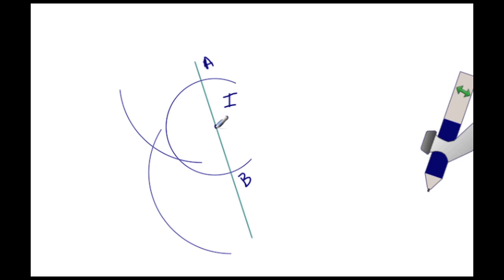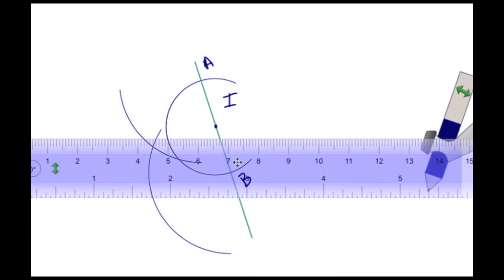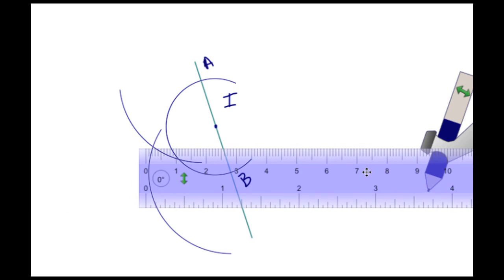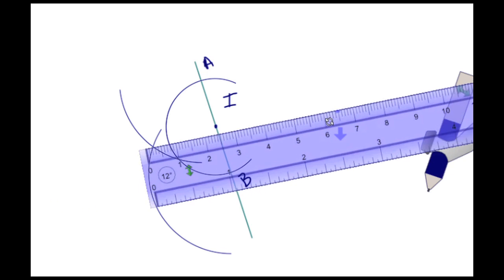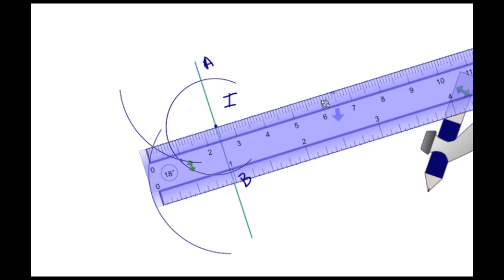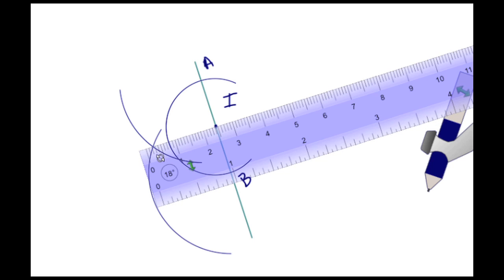And we're going to draw a straight line from that intersection to point I, and that there would be a perpendicular. So let's move the ruler up and let's complete that. So we have the ruler here, and now let's draw that line.